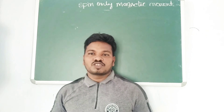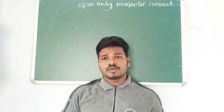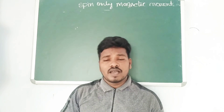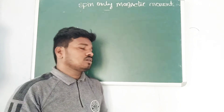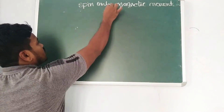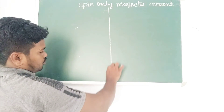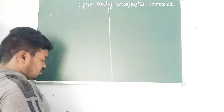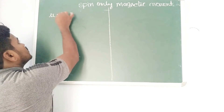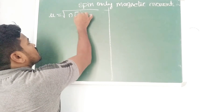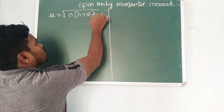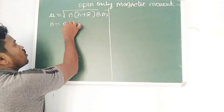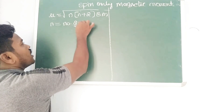Hello everyone, welcome to Easy Chemistry by Praveen. Today we are going to discuss the topic called spin-only magnetic moment — how to calculate the magnetic moment. There is one formula to calculate the magnetic moment of any compound, element, or ion: mu is equal to root of n(n+2) Bohr magnetons, where mu is the magnetic moment and n is the number of unpaired electrons.